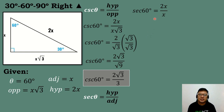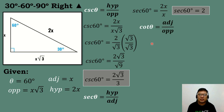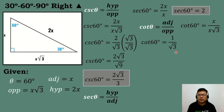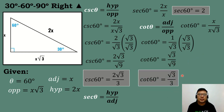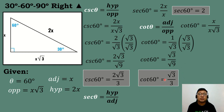Next is the value of secant 60 degrees. The hypotenuse is equal to 2x, and the adjacent is equal to x. So 2x over x is just equal to 2. So secant 60 degrees is equal to 2. And then the value of cotangent 60 degrees: the adjacent is equal to x and the opposite is equal to x square root of 3. So x over x cancels out, giving 1 over square root of 3. Rationalizing by multiplying by square root of 3 over square root of 3: square root of 3 over square root of 9, and square root of 9 equals 3. So cotangent 60 degrees is equal to square root of 3 over 3.